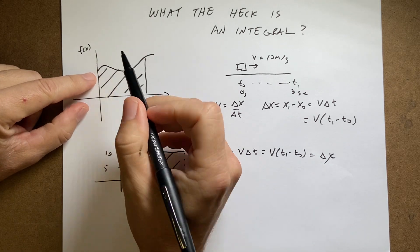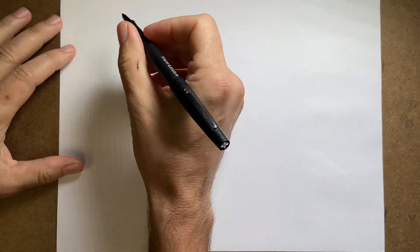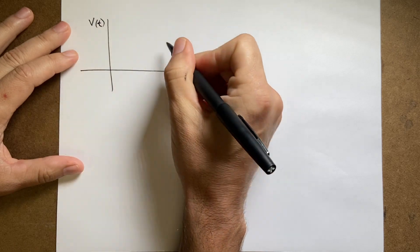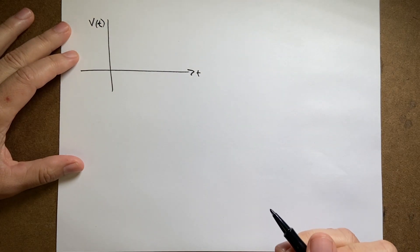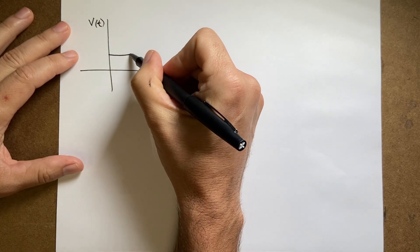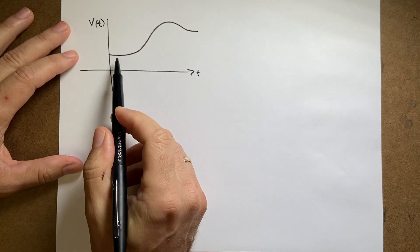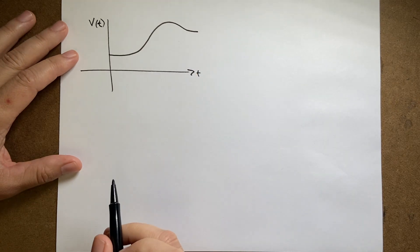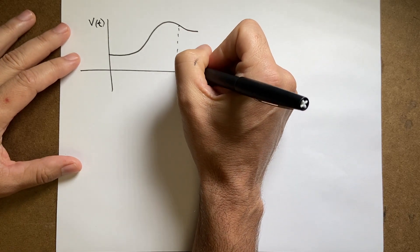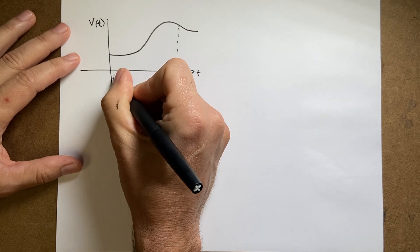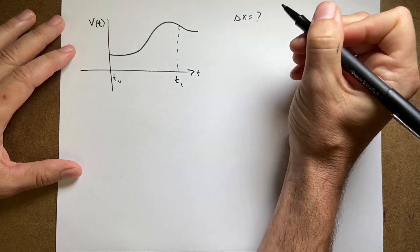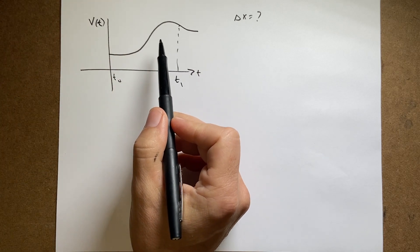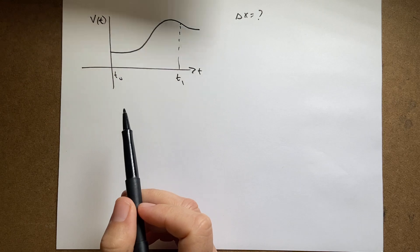But what if I had a velocity function that's not constant? Let me redraw a generic one — velocity as a function of time. This car starts off with some velocity, speeds up, then slows down, then reaches a constant velocity. I want to find how far it went, delta x, from t₀ to t₁. I could use average velocity, but I don't know how to find that average.